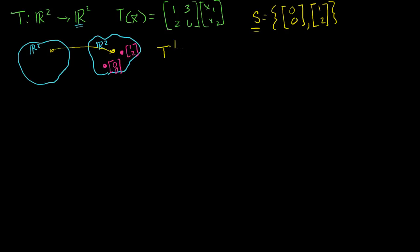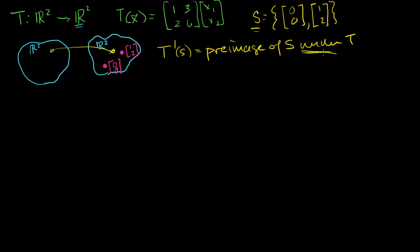So the pre-image of S under T — be careful, because when you say pre-image of something without saying under something else, it implies you're taking the image of an entire transformation. But when you're taking the image or pre-image of a set, make sure you say under what transformation. So we want the pre-image of this subset of our codomain under T, written as T inverse of S. This is all of the elements in our domain where the transformation of those X's is a member of the subset of our codomain.